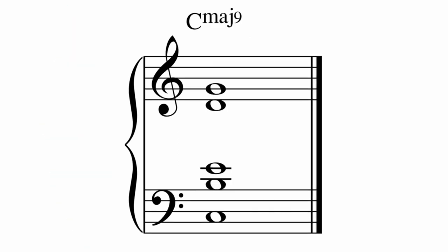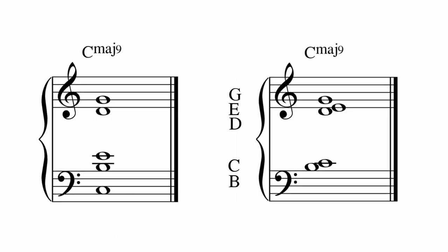Here's a C major 9 from earlier. We have a C, B, E, D and G. It sounds sweet and consonant. Now with those same pitches we can create a vastly different sound. Cool, eh?